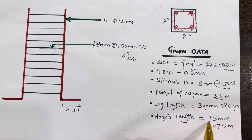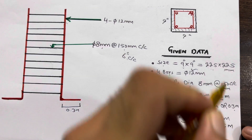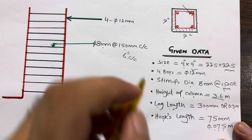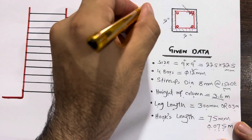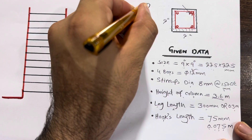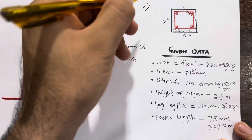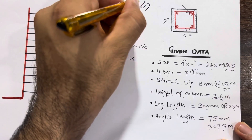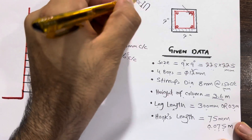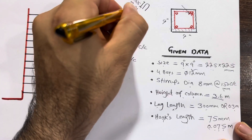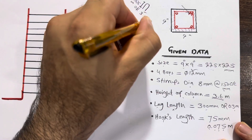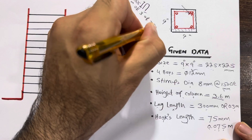The hook length is 75 millimeter or 0.075 meter (3 inches). Each hook length is 0.075 meter — it should not be less than this.